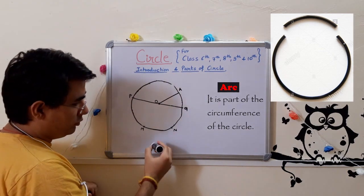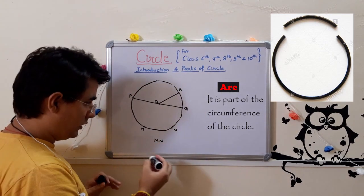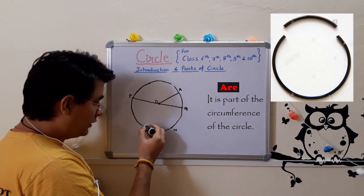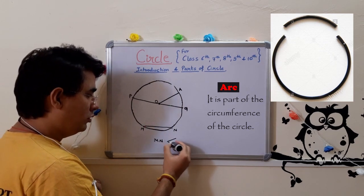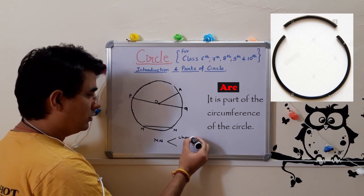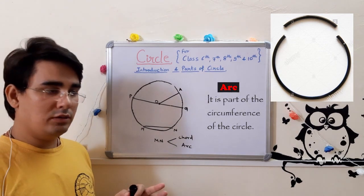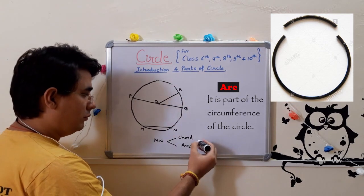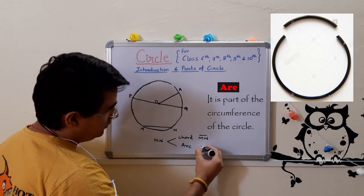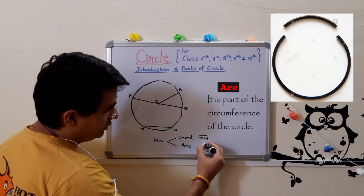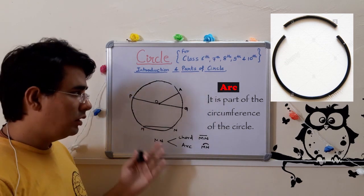So this is a very important way to write. If I write MN, then we will not know what to talk about. What does it mean? If it becomes a line, then MN chord and arc. So how do we differentiate? If it becomes a line, then line segment MN. If I make MN with this symbol on top, then arc MN is called.